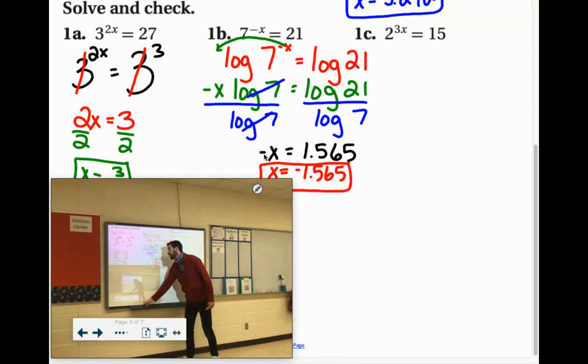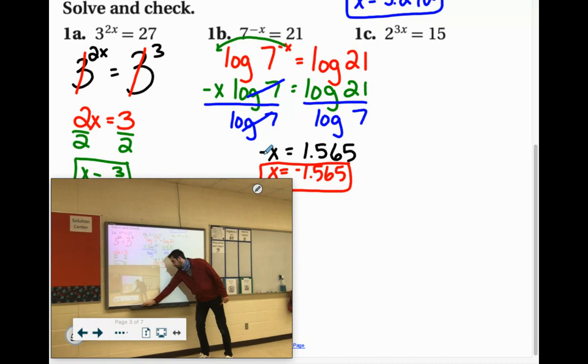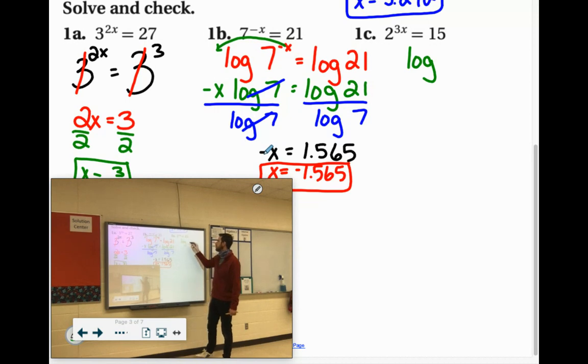All right, last one of these. 2 and 15, they don't have a common base. So we're going to have to log them. So we'll say log 2 to the 3x equals log 15.